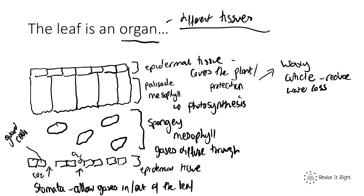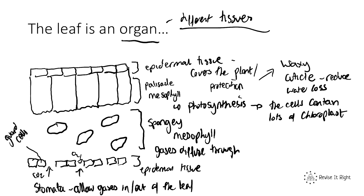The palisade mesophyll is where photosynthesis happens. Since photosynthesis takes place in the chloroplast, the cells in the palisade mesophyll contain lots of chloroplasts for lots of photosynthesis to take place. So the palisade mesophyll is adapted by containing lots of chloroplasts.